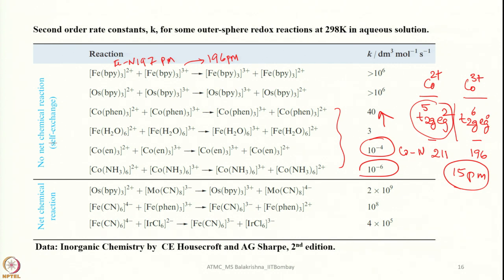All self-exchange reactions here involve cationic species in aqueous solutions. The rates of these reactions are typically not affected by the nature or concentration of the anion present in solution. As long as we have cationic species, the rate is independent of the concentration of the anion present; the concentration of anionic species has little influence on the rate as long as we have a counter-cationic species in the reaction sphere.